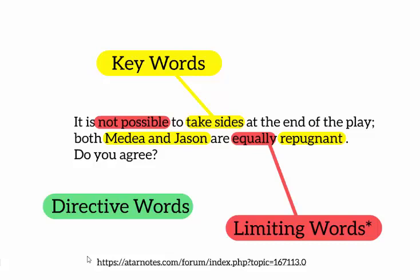The limiting words are the provocative ones you can argue with. 'It is not possible to take sides' — really? Well, it is possible. I might pick Medea over Jason or Jason over Medea. The fact that they've said 'not possible' is inviting me to say, 'Actually, I disagree.' Also the word 'equally' is a challenging word — it's saying they are exactly the same in the amount of hatred or ugliness we feel toward them, and I could easily argue with that point.